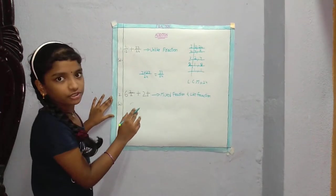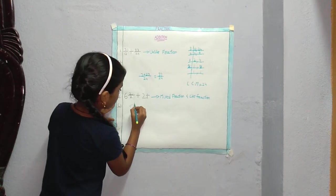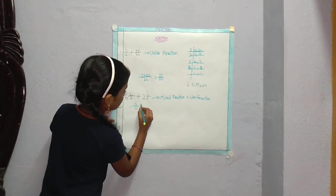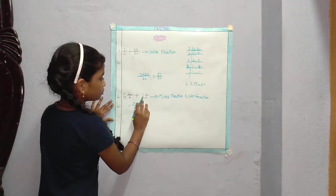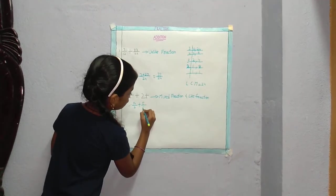6 times 2 is 12, 12 plus 2, 14. 14 by 2. Plus 2 times 2 is 4 plus 1. 5 by 2.